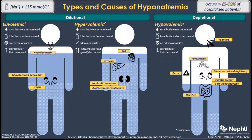Next, we could have a hypertonic or hyperosmolar hyponatremia, where we have a high plasma osmolality somewhere above 295 milliosmoles per kilo. This can be caused by severe hyperglycemia coupled with dehydration, recent mannitol or sorbitol usage, or recent administration of radio contrasts.